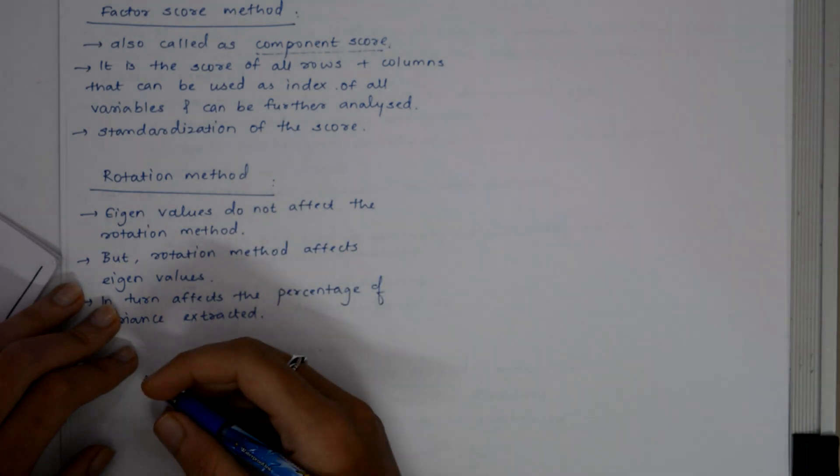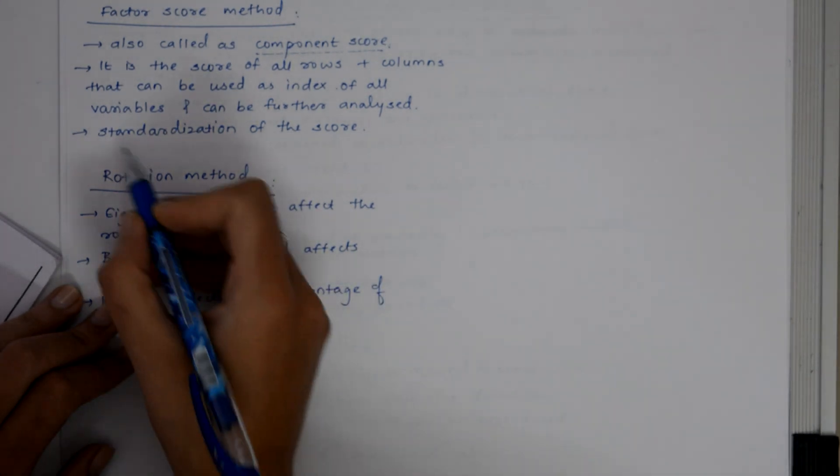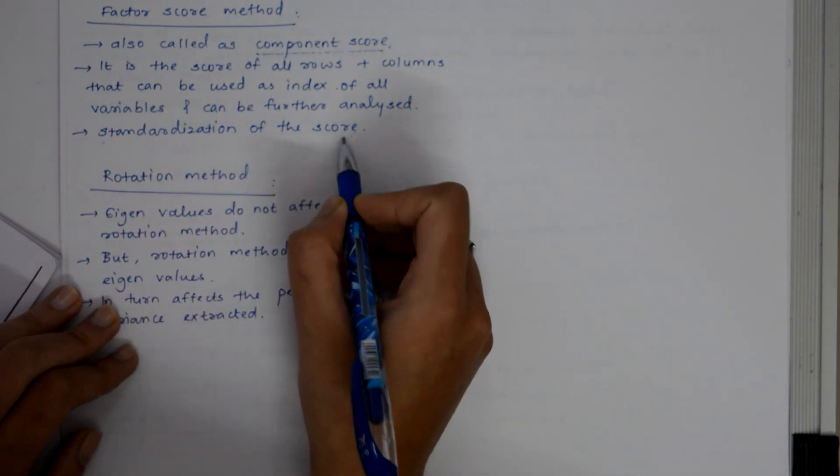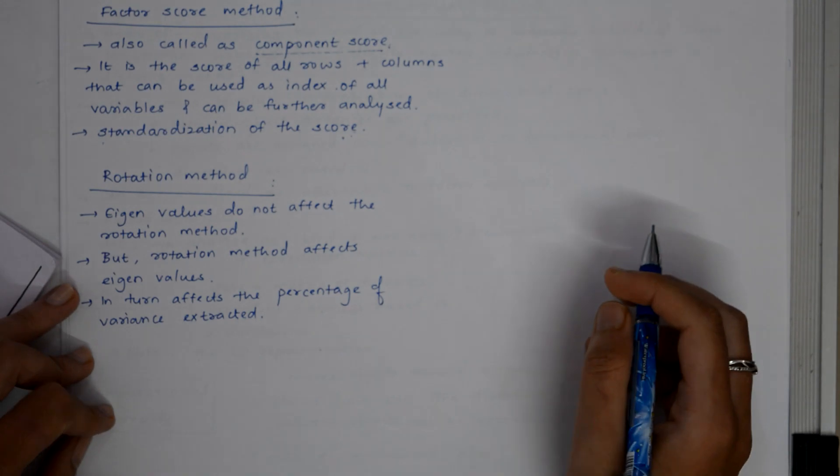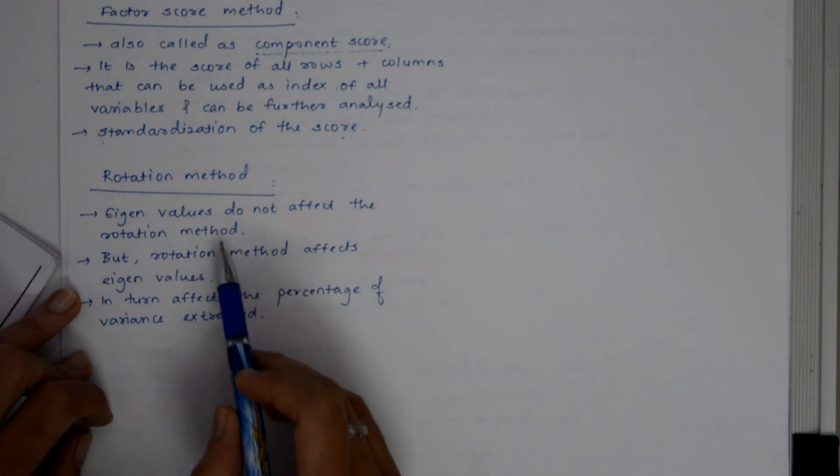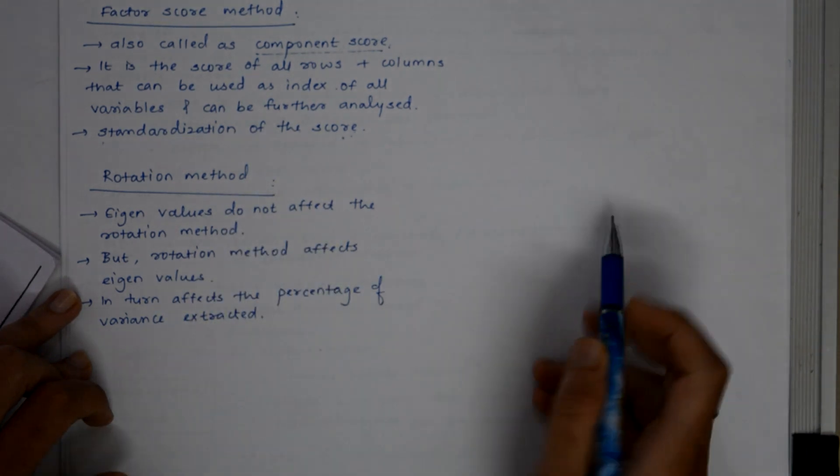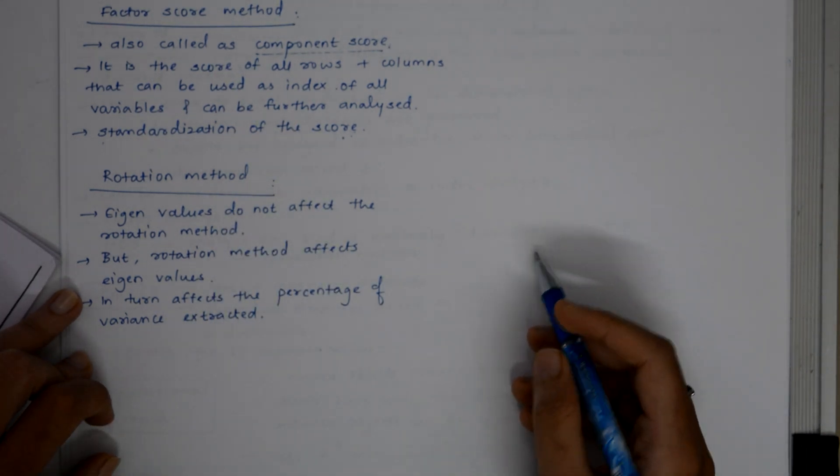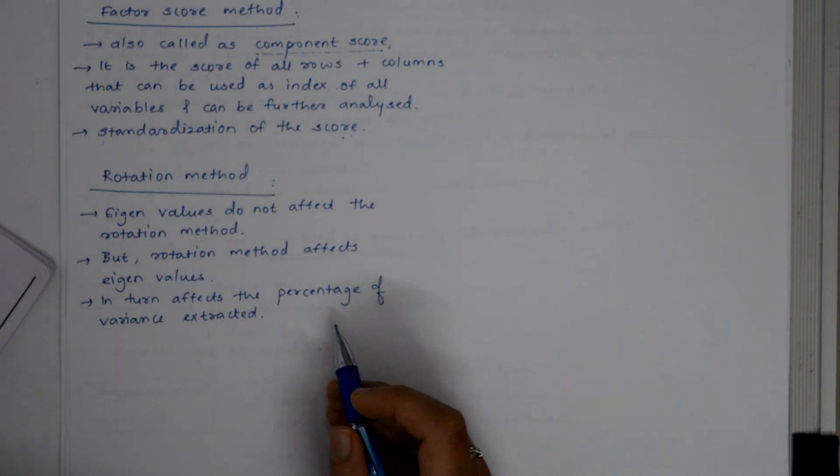...will behave as factor scores and will move. So there is this standardization of score in this method. The third method is the rotation method. Eigenvalues do not affect this rotation method, but the rotation method affects the eigenvalues of the matrix, and in turn this affects the percentage of the variance extracted.